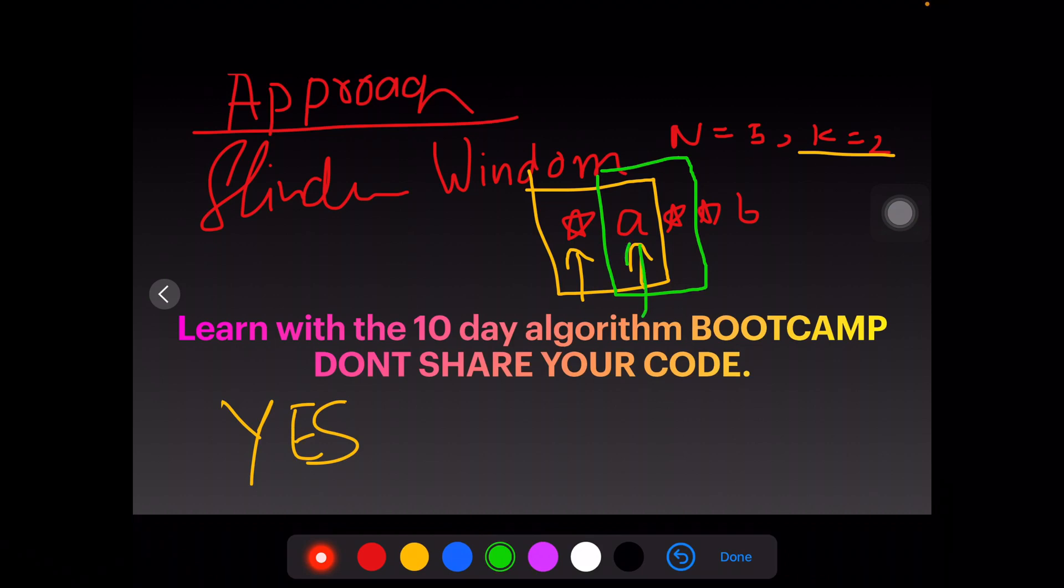The new two pointers would be pointing here and here. If we find that all the characters in the window are stars, we print a yes and exit from our current program. If not, we proceed and we slide our window once again.